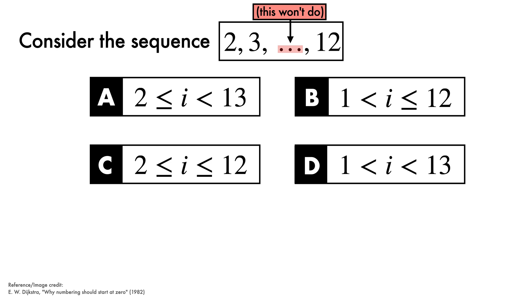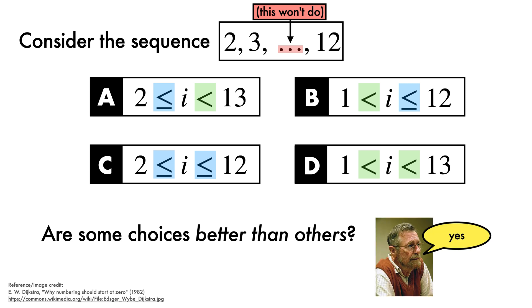A and D have one less than or equals to operator, and one less than operator. C has two less than or equals tos, while D has two less thans. Are some choices better than others? Yes, says Dijkstra.